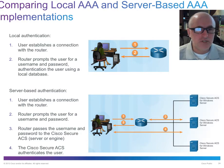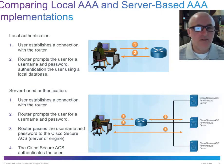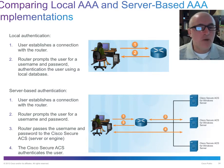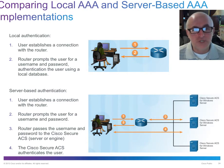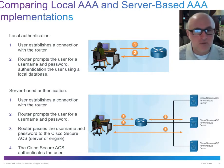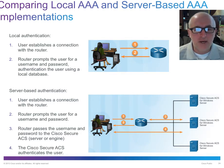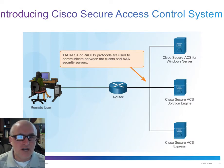With local authentication, the user connects to the local device, which prompts for username and password and validates against the local database. With server-based authentication, the process is similar up to that point, but in step three the local device passes the username and password to a remote server using either TACACS or RADIUS as the protocol. The server authenticates the user with a thumbs-up or thumbs-down, then sends the result back to the device. That link between the local device and the remote server is where TACACS or RADIUS comes in.